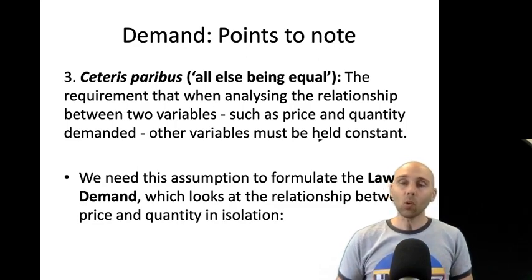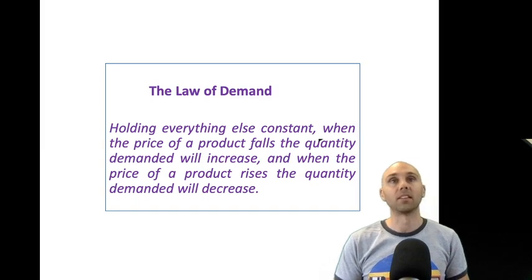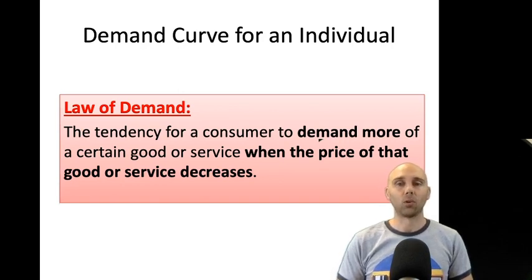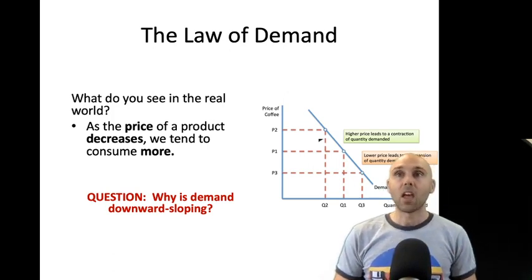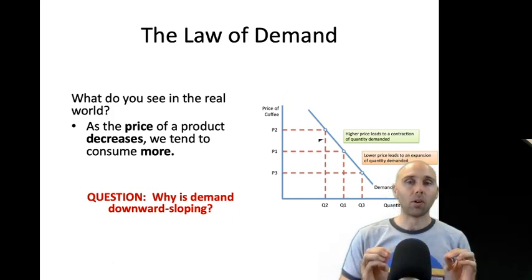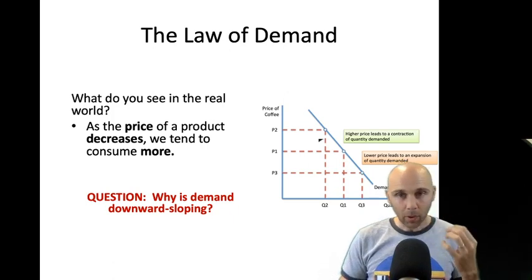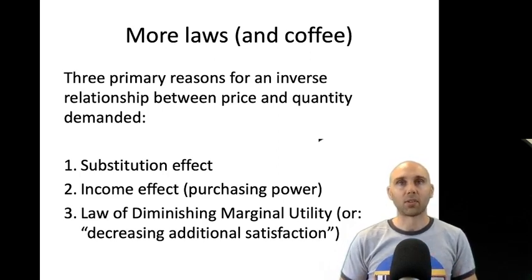With that assumption, we can formulate the law of demand. The law of demand formally states that holding everything else constant, when the price of a product falls, the quantity demanded will increase; and when the price rises, the quantity demanded will decrease. In simple layman's terms, consumers seem to demand more of a good or service when the price decreases — in other words, we have a downward sloping demand curve. We can decompose that effect into three reasons: the substitution effect, the income effect, and the law of diminishing marginal utility.